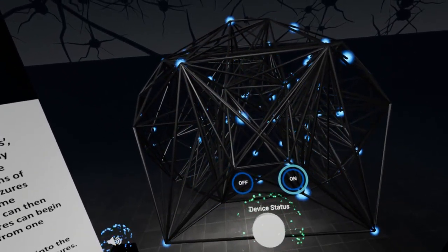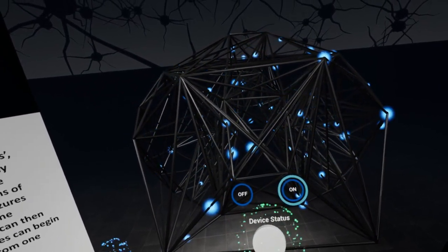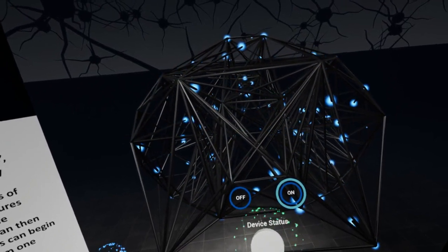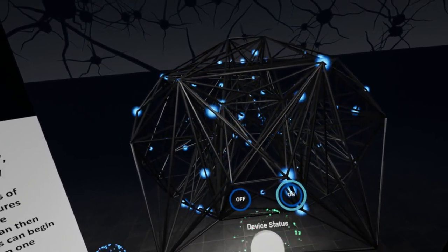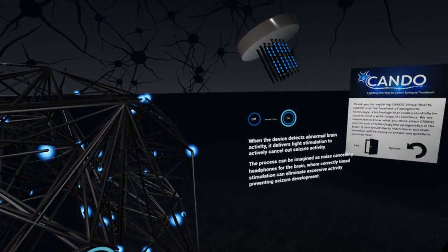Using light instead of electricity means that the stimulation can be targeted to specific types of cells and does not interfere with device recording. This allows the therapy to respond instantly to the ever-changing activity of the brain. This is called closed loop control.